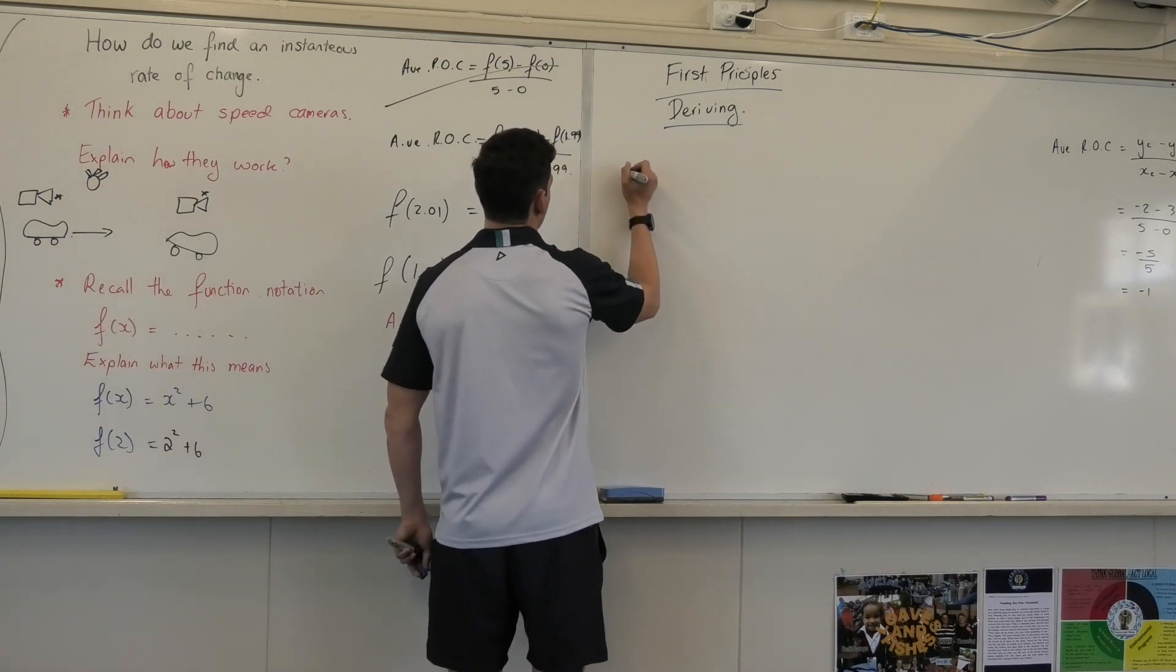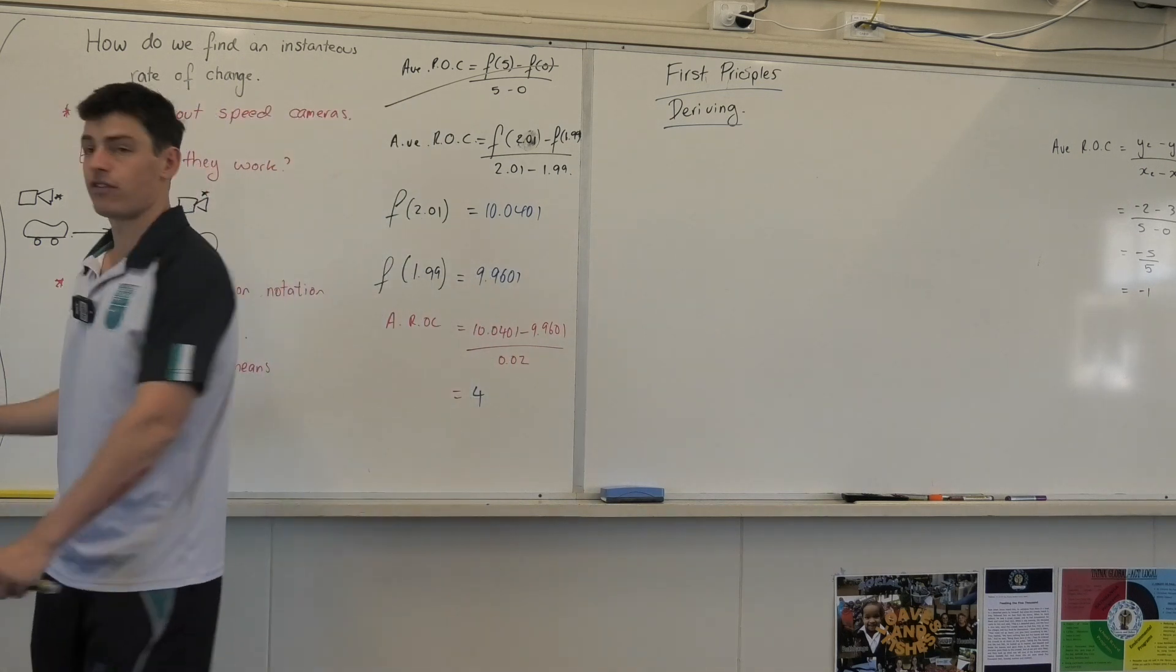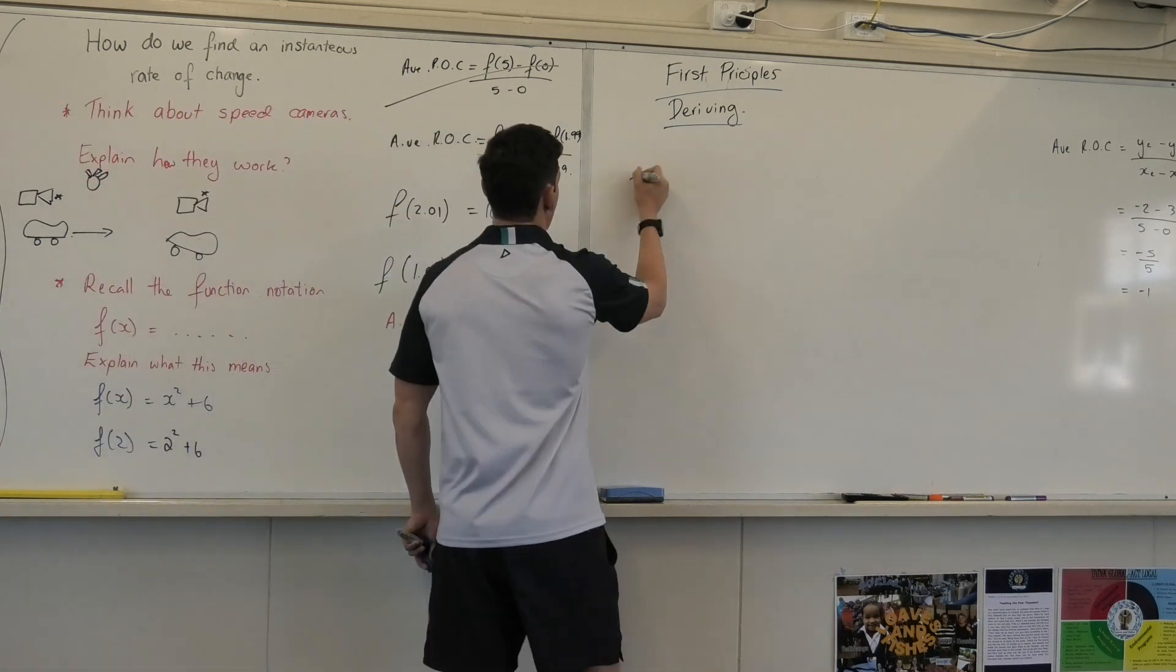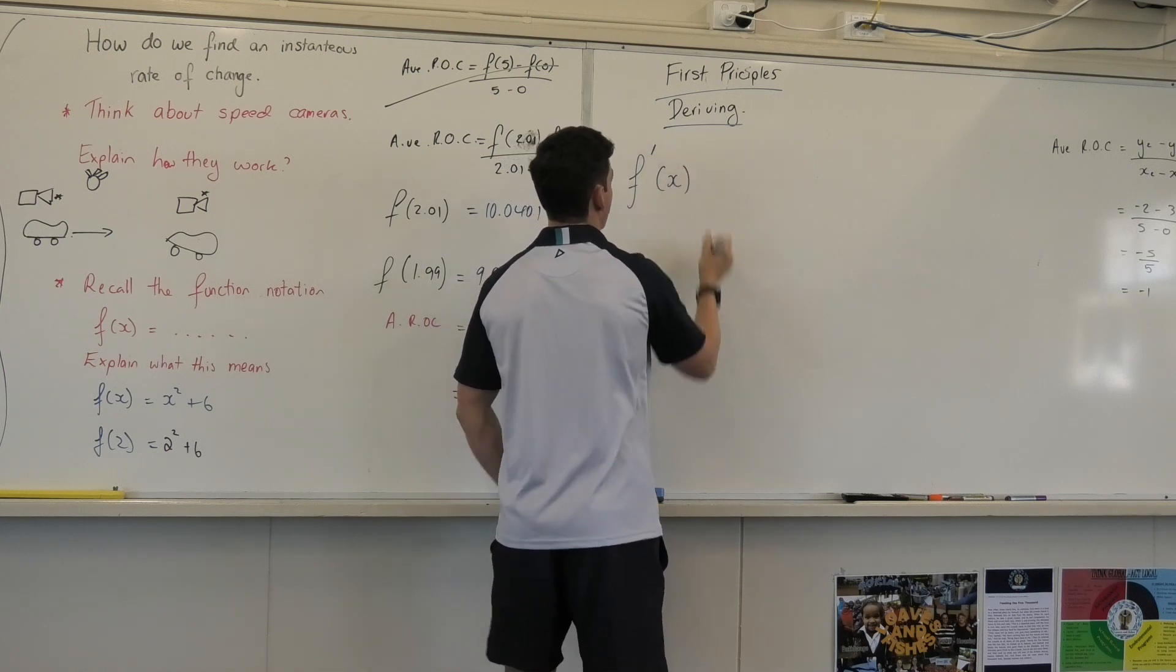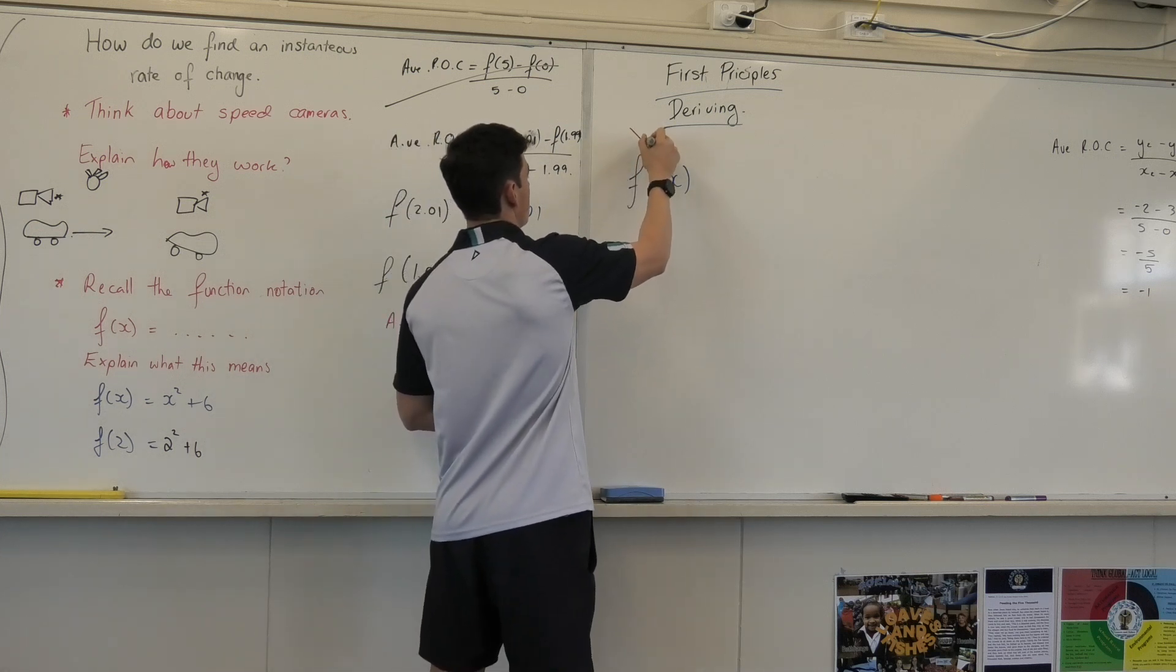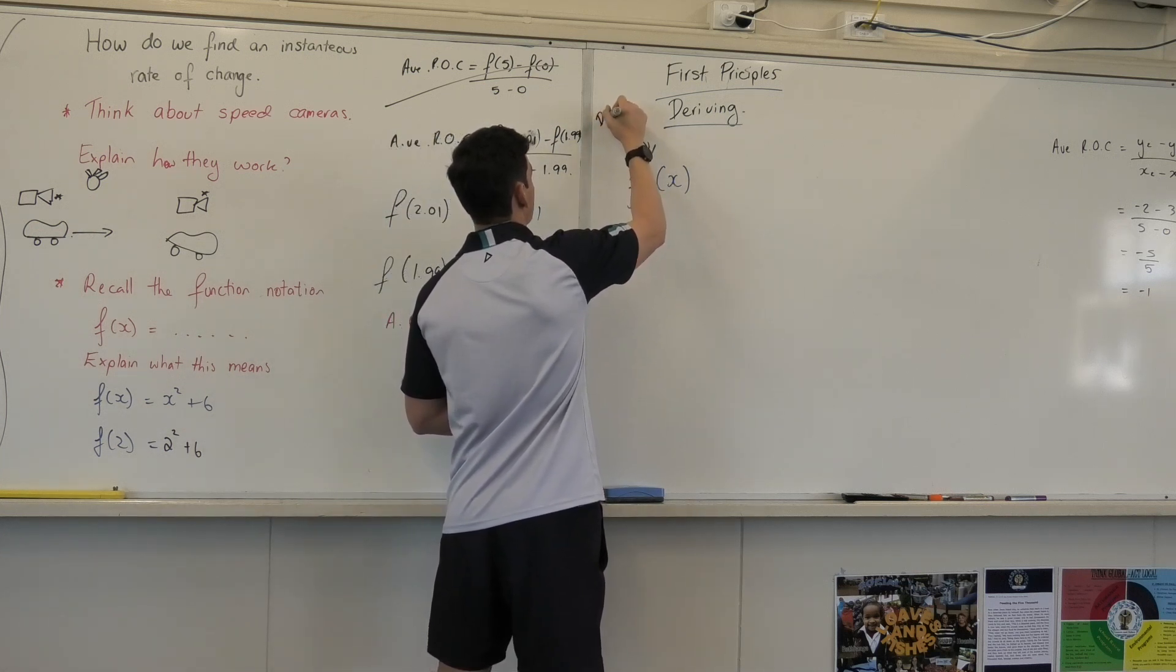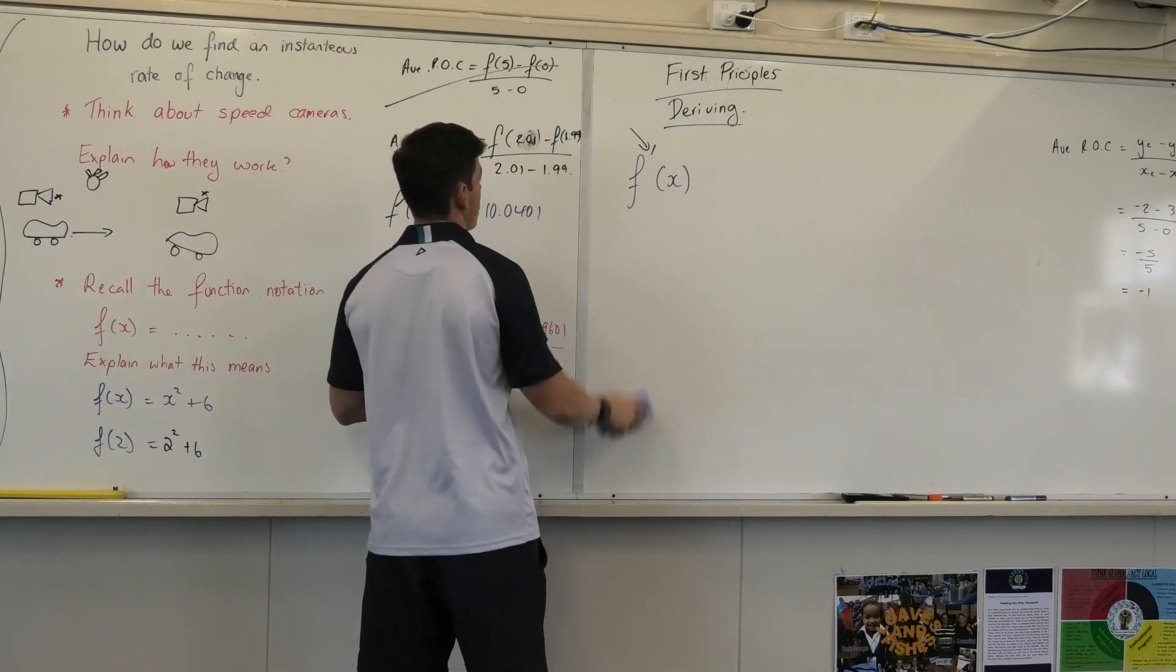To find... Now we can actually represent that. So you know this form that I've been giving us fx? To show that we're finding the instantaneous rate of change, we put this little funky dash in. So that tells us we're deriving. I won't use deriving, it's not a word we've been using. That tells us we're finding instantaneous.